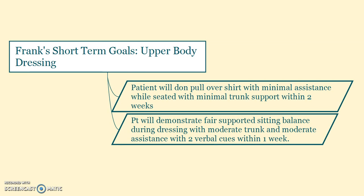Frank's short-term goals for upper body dressing: the patient will don a pullover shirt with minimal assistance while seated with minimal trunk support within two weeks. Another goal is that the patient will demonstrate fair supported sitting balance during dressing with moderate trunk support and moderate assistance with two verbal cues within one week.